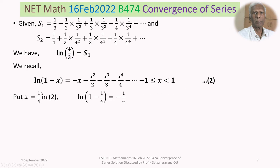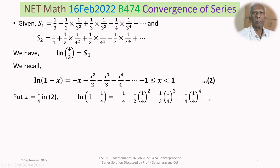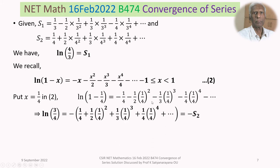Put x equal to 1/4 in equation 2. Then we get ln(1 − 1/4) equal to minus 1/4 minus 1/2 times (1/4)² minus 1/3 times (1/4)³ minus 1/4 times (1/4)⁴, minus so on and so forth. On the left-hand side, 1 minus 1/4 is 3/4, so ln(3/4) equals minus of the quantity in brackets, which is precisely S2. Therefore minus S2 equals ln(3/4).